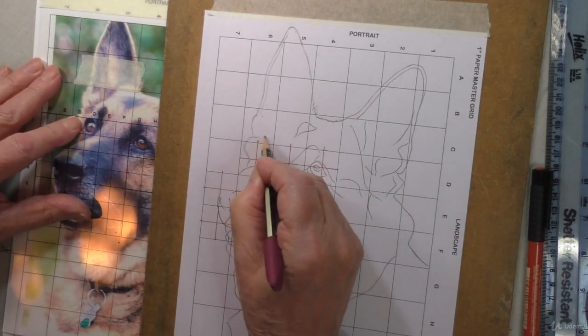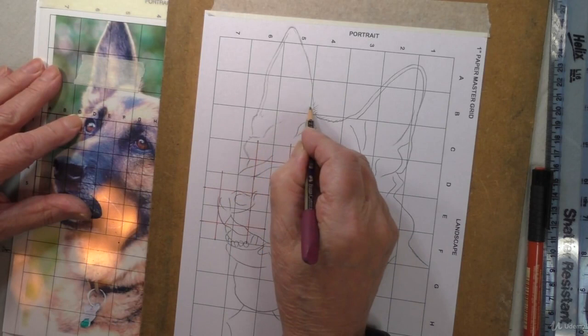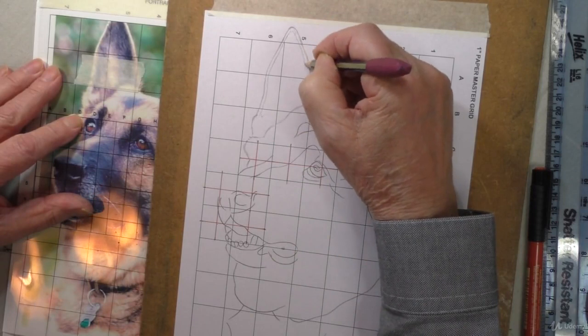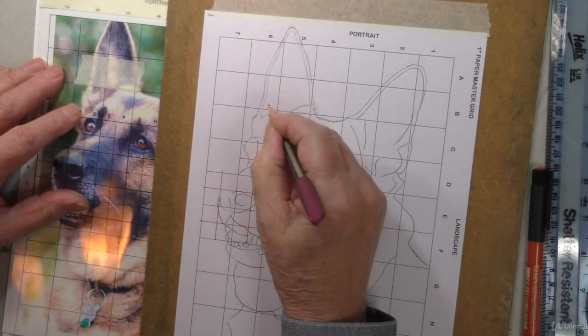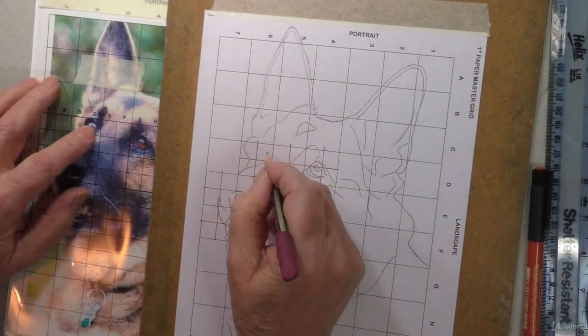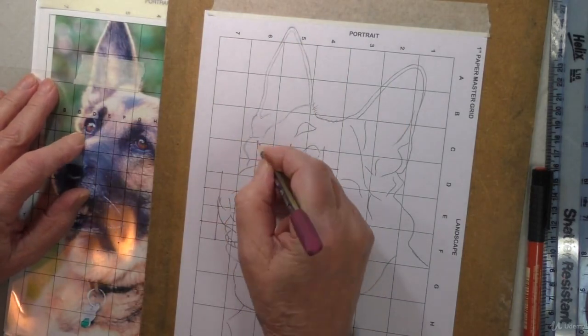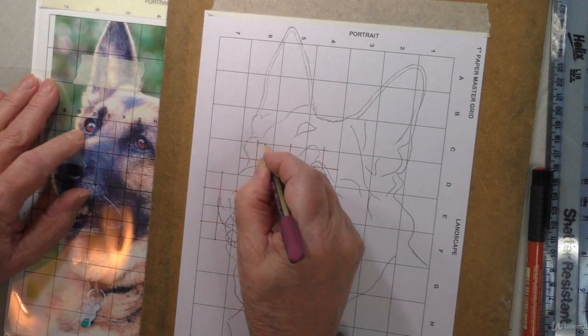That comes down to there. This has come from this bit here. Once you get used to square drawing, you can speed up because it's not critical, especially on the fur, that it's absolutely spot on. It's only the eyes and nose and those critical areas that you'll need to be careful with. The important thing now is the eye. The eye is in that one there. So let's take a lot more care over this.